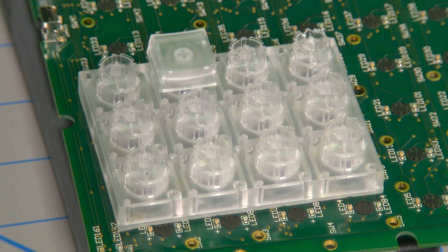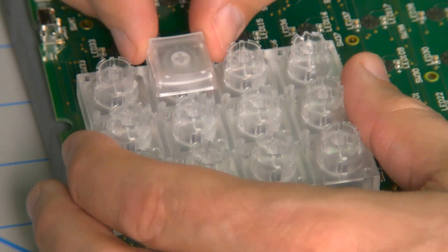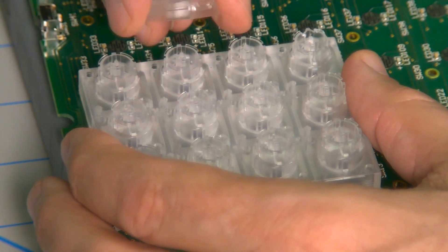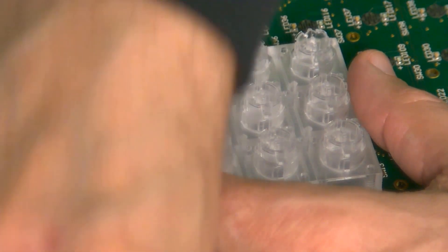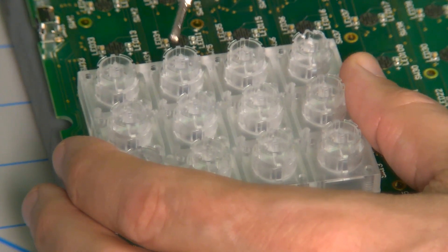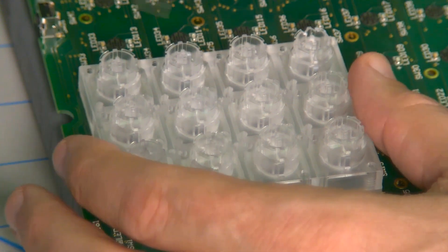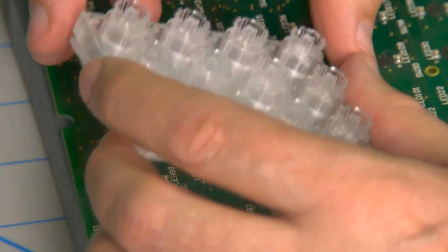If you were to take Annex Keys apart, this is what you would find. The key cap that you press is on top with the lens to hold the legend in place. Below that is what we call the key plunger, which moves up and down and makes contact on the bottom.